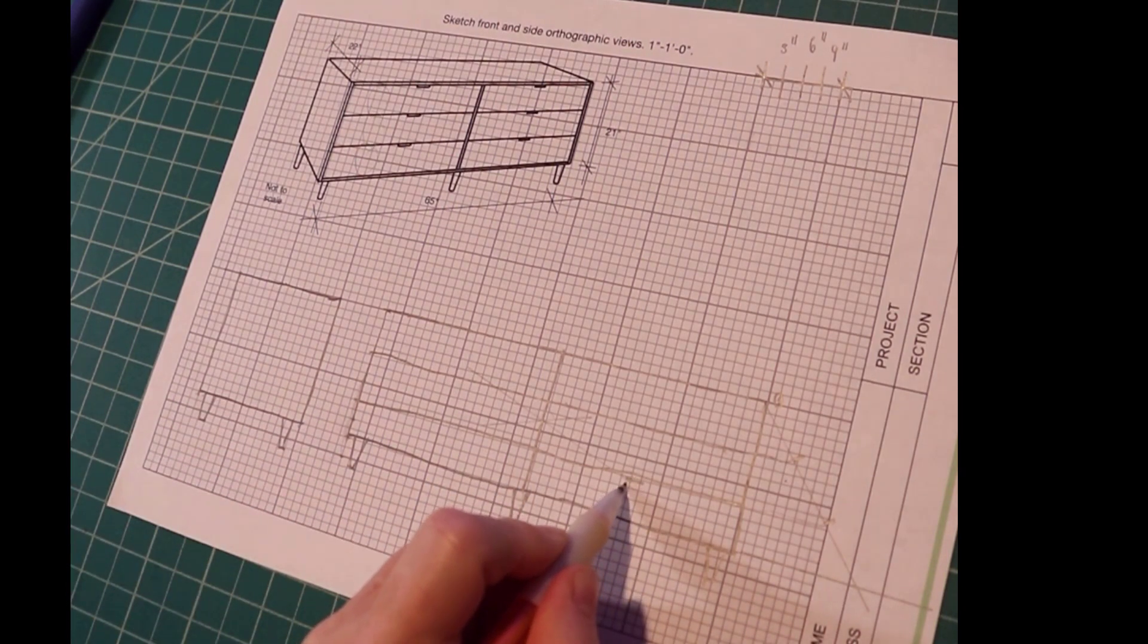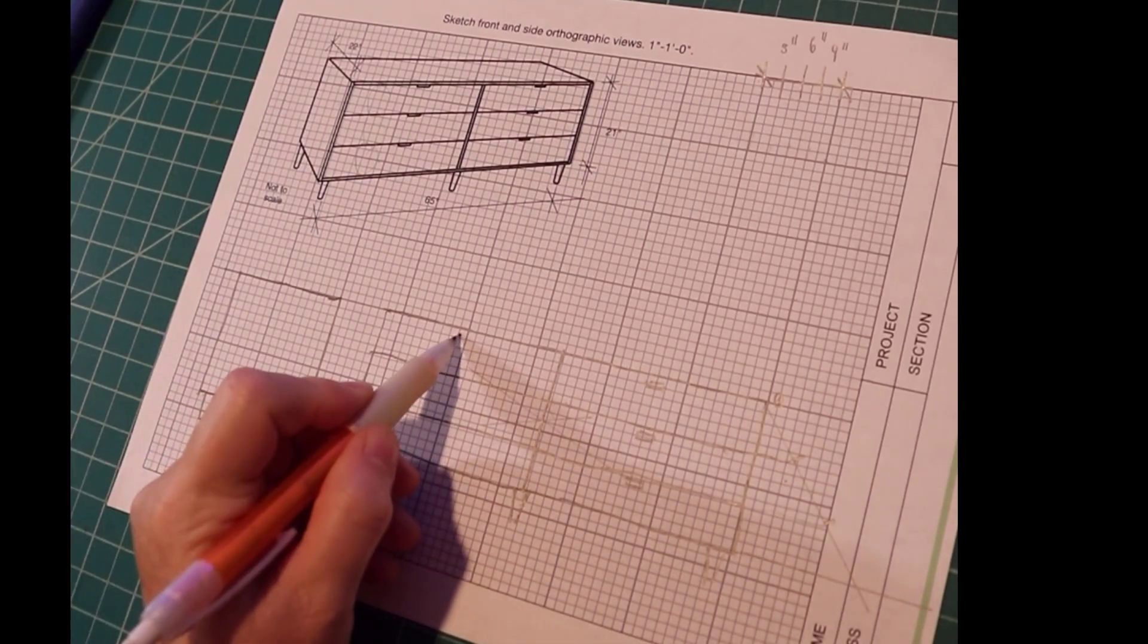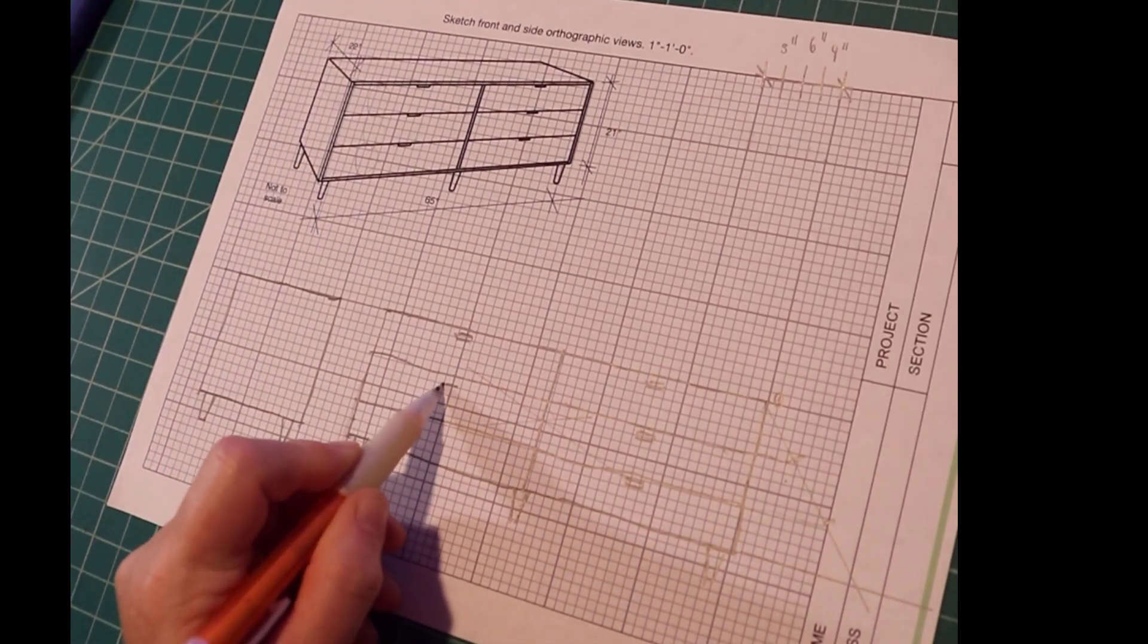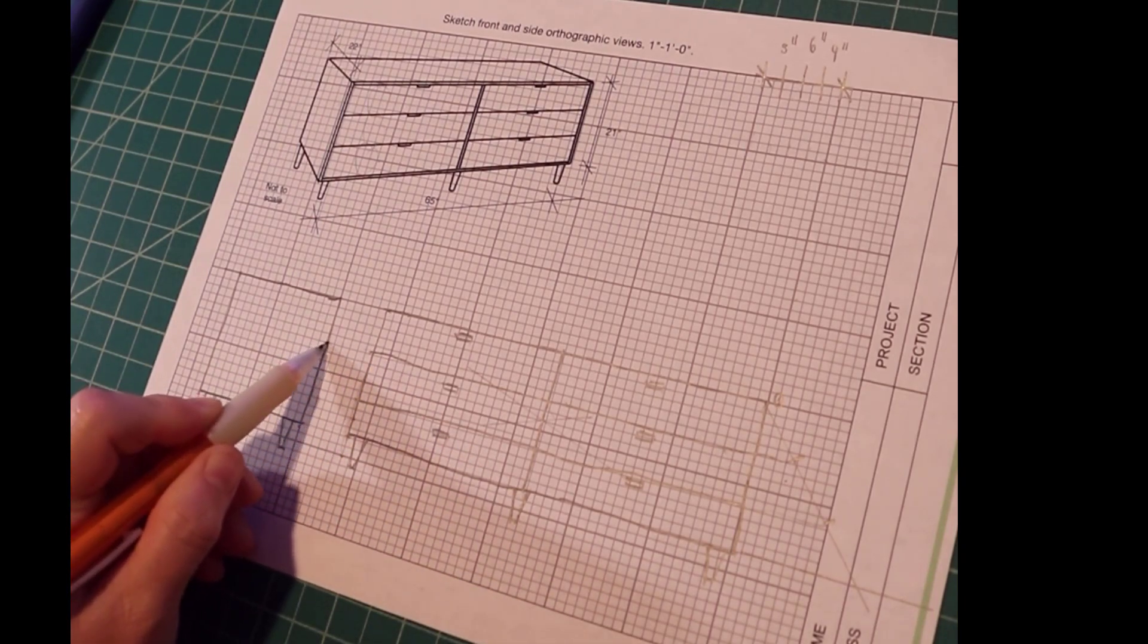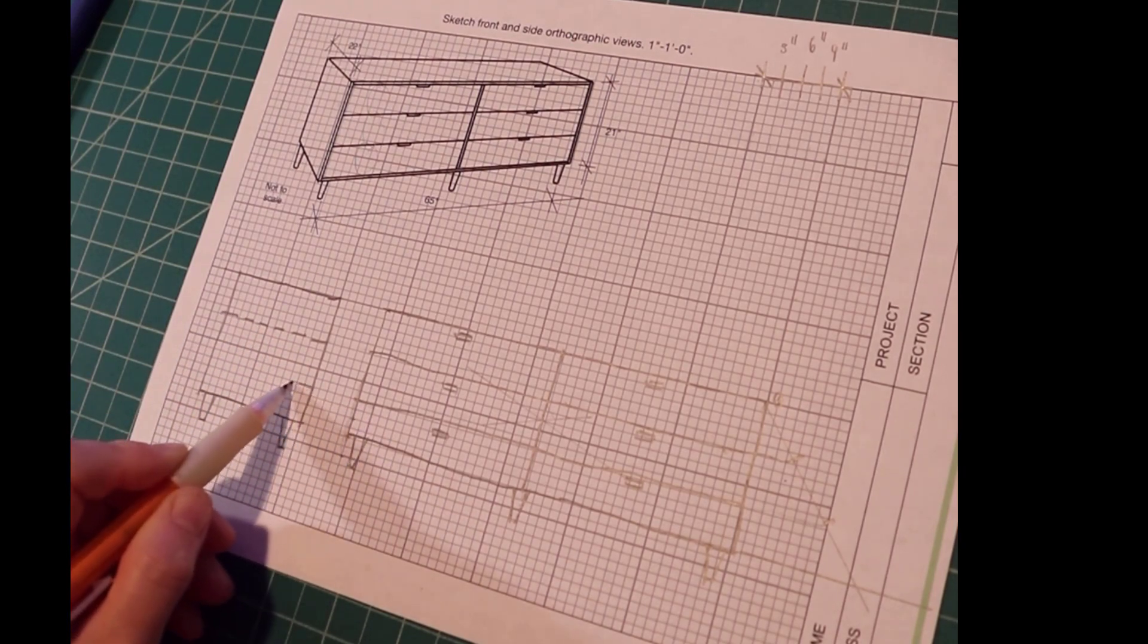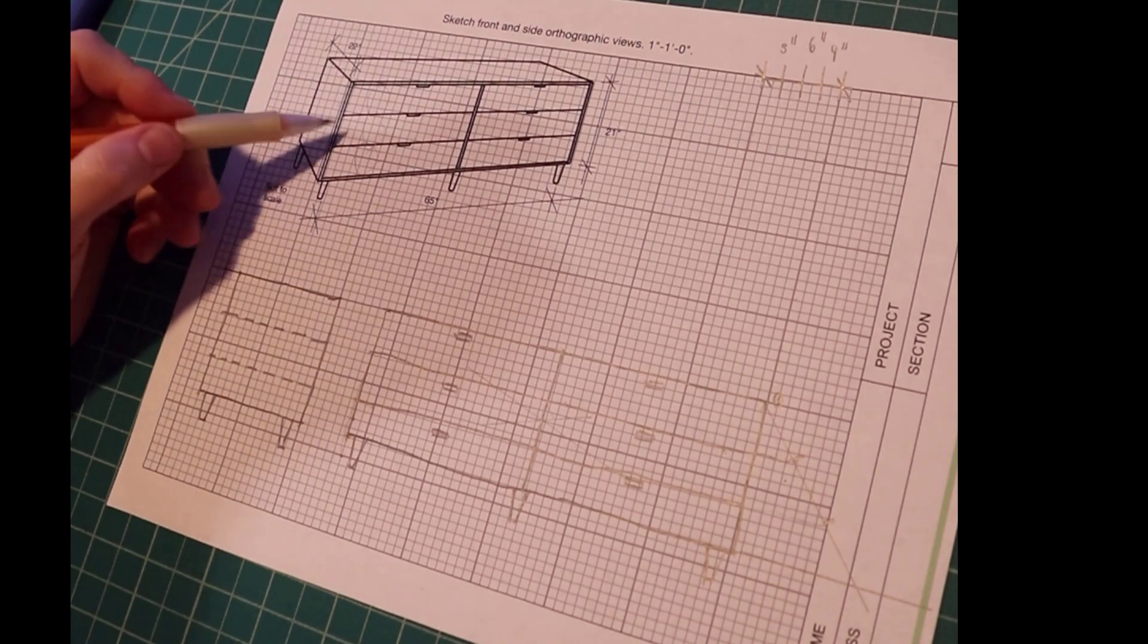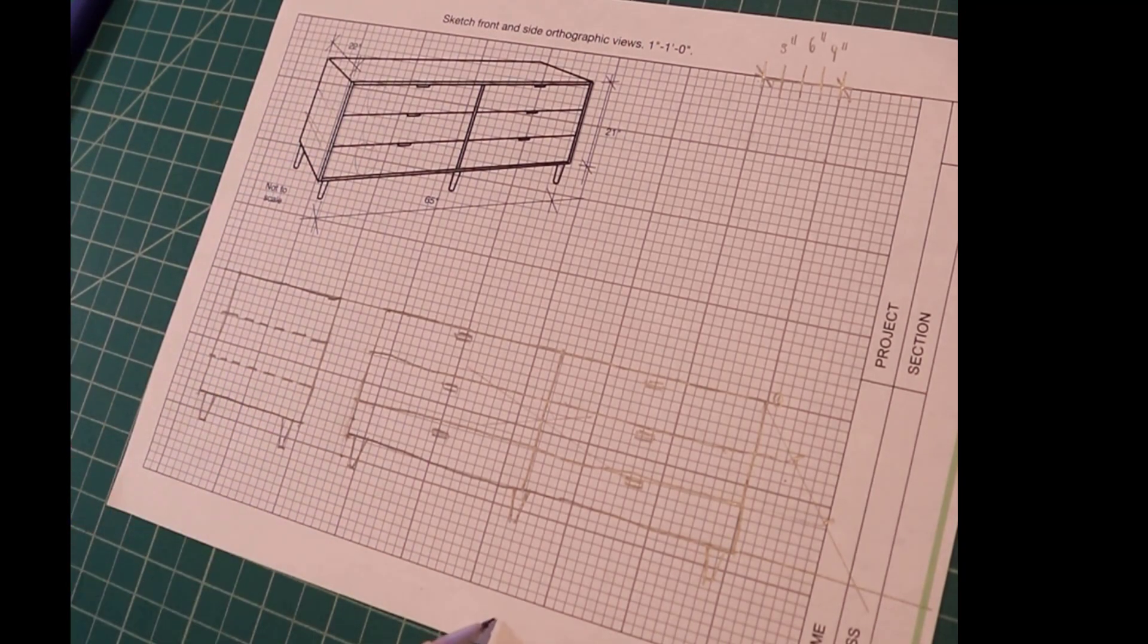You can add handles to this. Now project these over and draw dashed lines representing the drawers over here. These are hidden lines, meaning they represent a feature that you can't see in this view, but it's important so you need to acknowledge its existence.